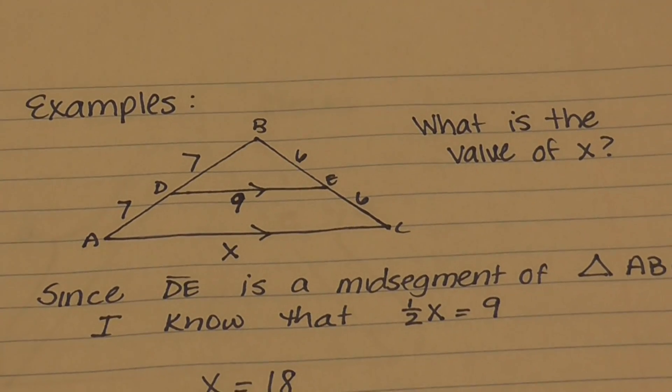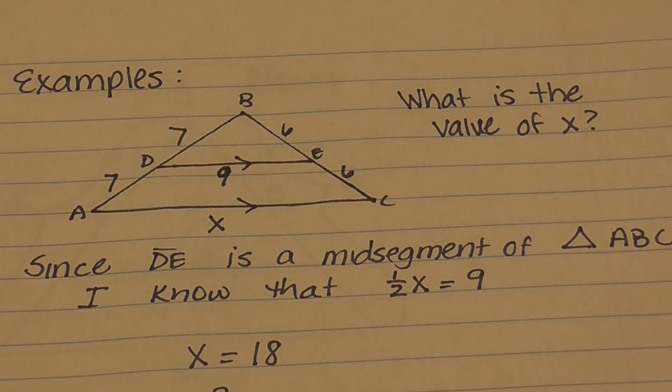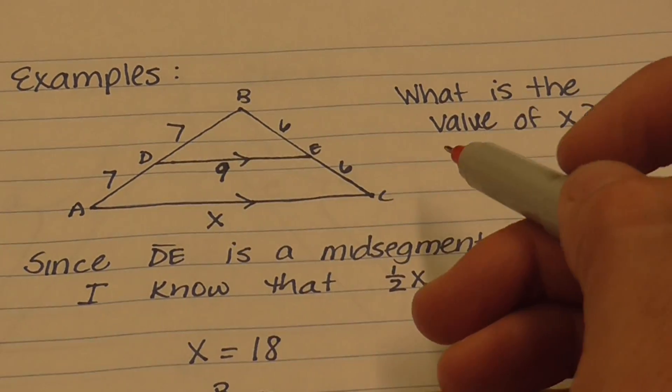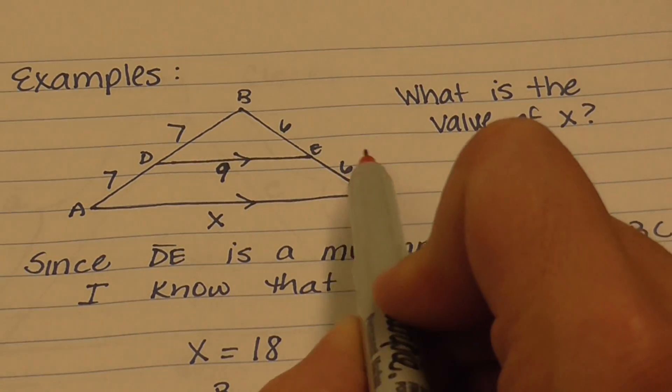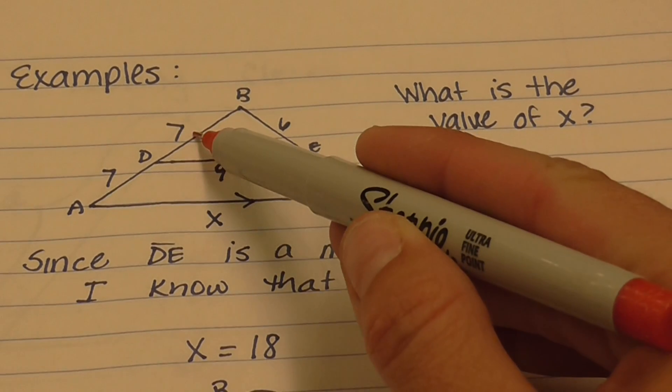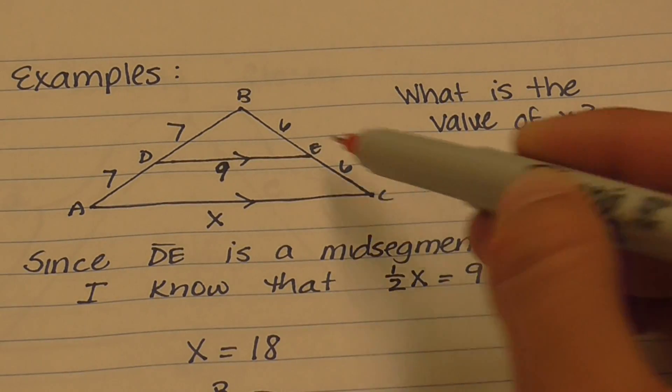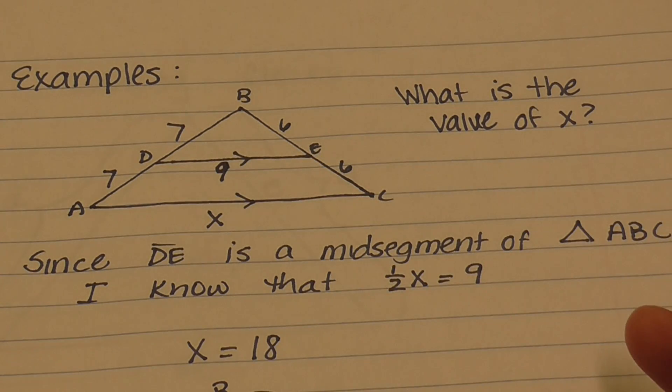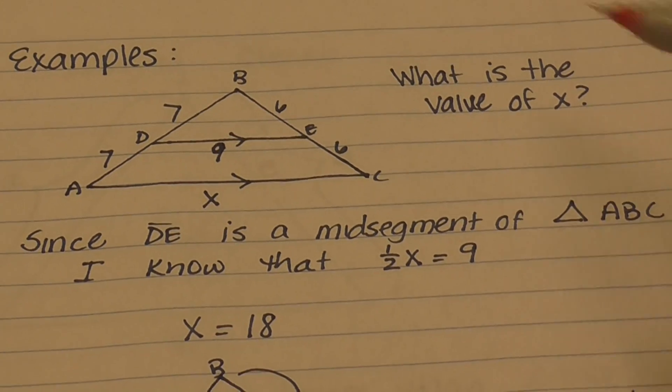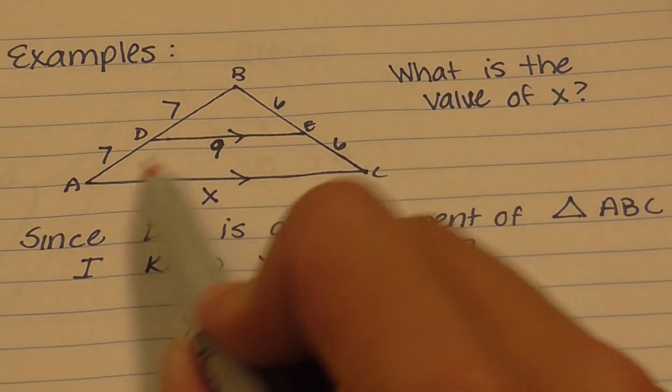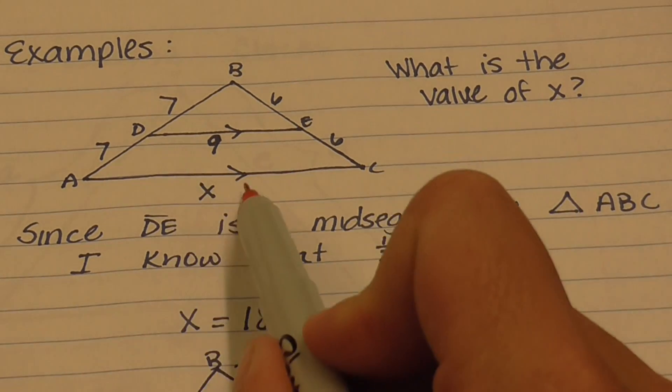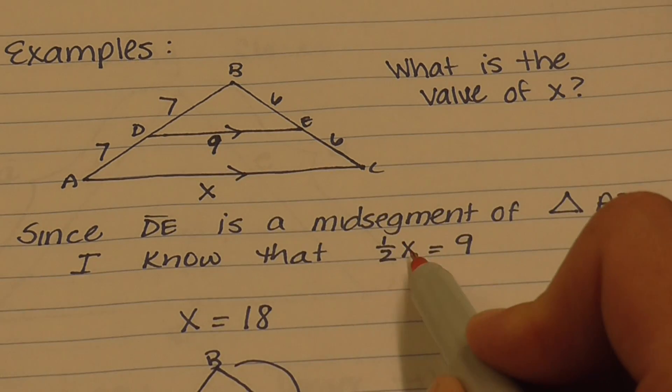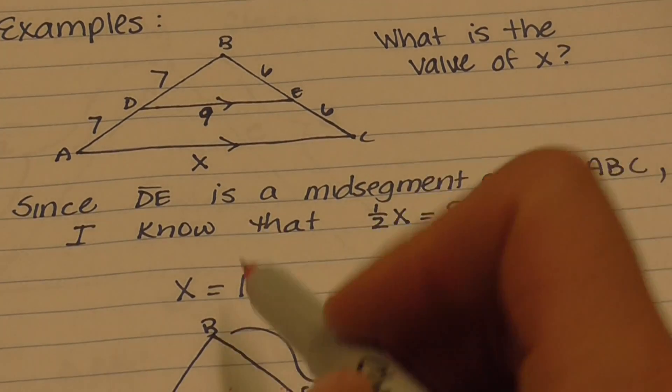A problem that would use mid-segment theorem would be: find the value of X. It gives you the length of AD is 7 and DB is 7, and the length of BE is 6 and EC is 6. Because this is the same as that and this one's the same as that one, I know this is a mid-segment. Additionally, it tells us that these two lines are parallel, which reinforces that it's a mid-segment. That means that this length is half of the total of this one. So one half times AC equals DE. One half times X equals 9, so X has to equal 18.